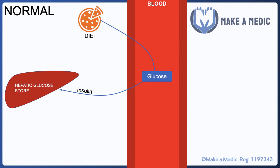This rise in glucose will be detected by the beta cells of the pancreas, which produce insulin. Insulin pushes glucose from the bloodstream into the surrounding cells and also encourages the storage of glucose as glycogen within the liver. We also have hormones that do the opposite — growth hormone, cortisol, adrenaline, and notably glucagon, produced by alpha cells in the pancreas, can liberate glucose from stores across the body to maintain blood glucose concentration.